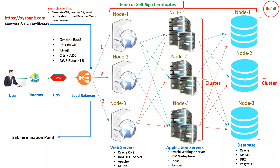In the enterprise world, SSL is most often terminated at the load balancer level. When configuring with CA certificates, SSL is configured at the load balancer level, and inside the load balancer you have your web server, application server, and database. Within that environment, demo or self-signed certificates may be used internally. However, in environments without an external hardware load balancer where web servers are accessed directly, all certificates are configured at the web server level.